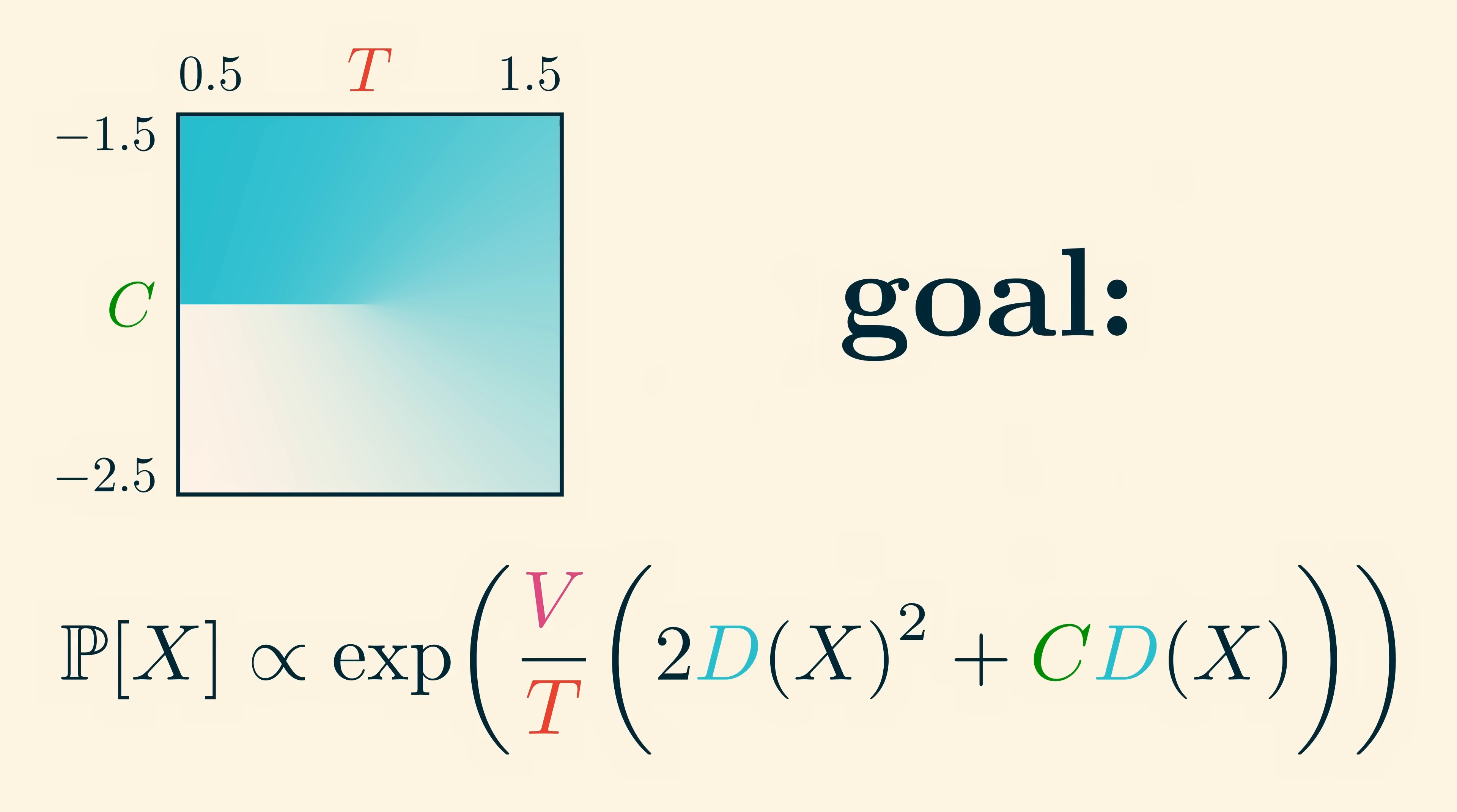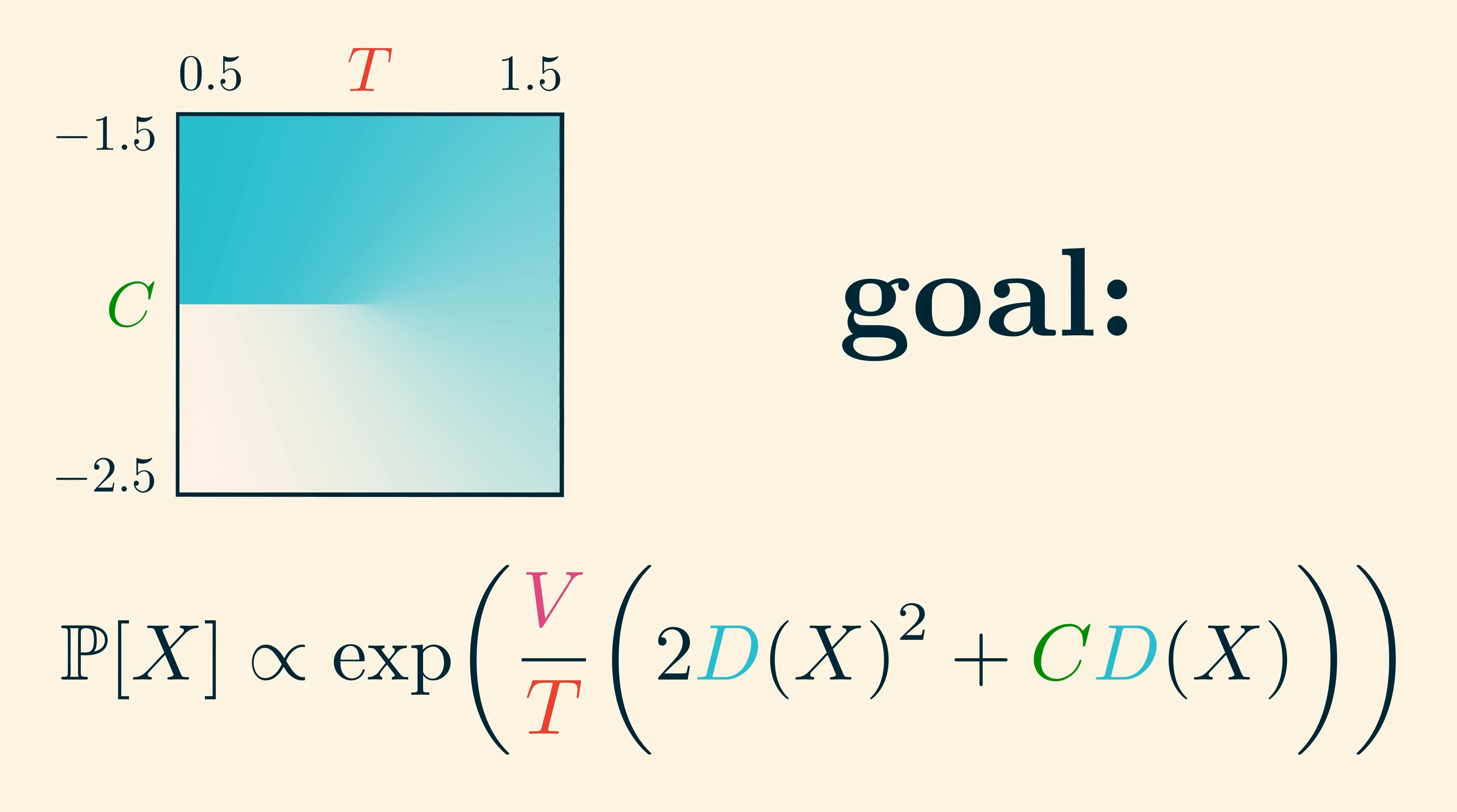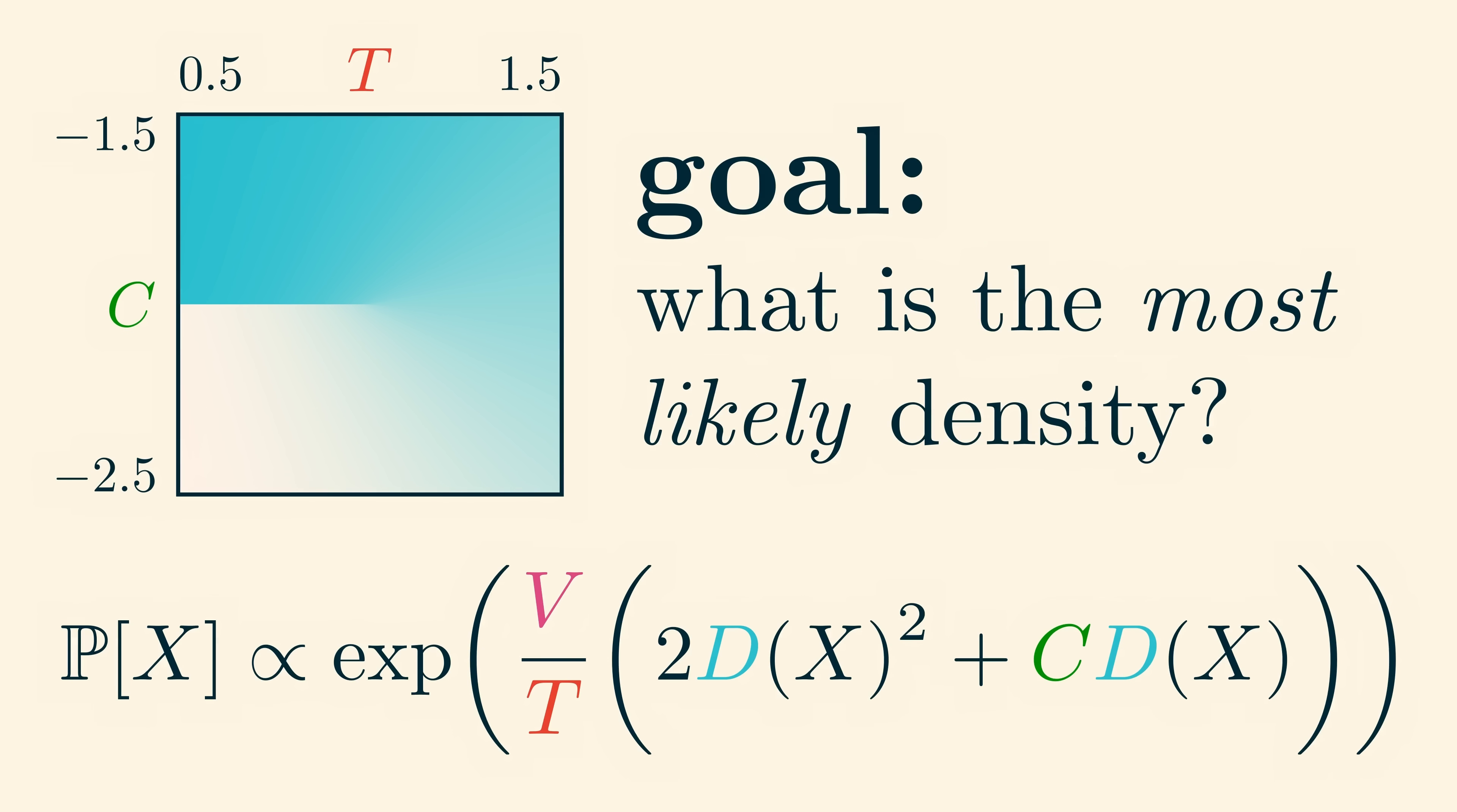Our goal for the rest of this video is to see how to use this information to figure out the phase diagram of our mean field model. In other words, we want to figure out which density is most likely given the parameters t and c.